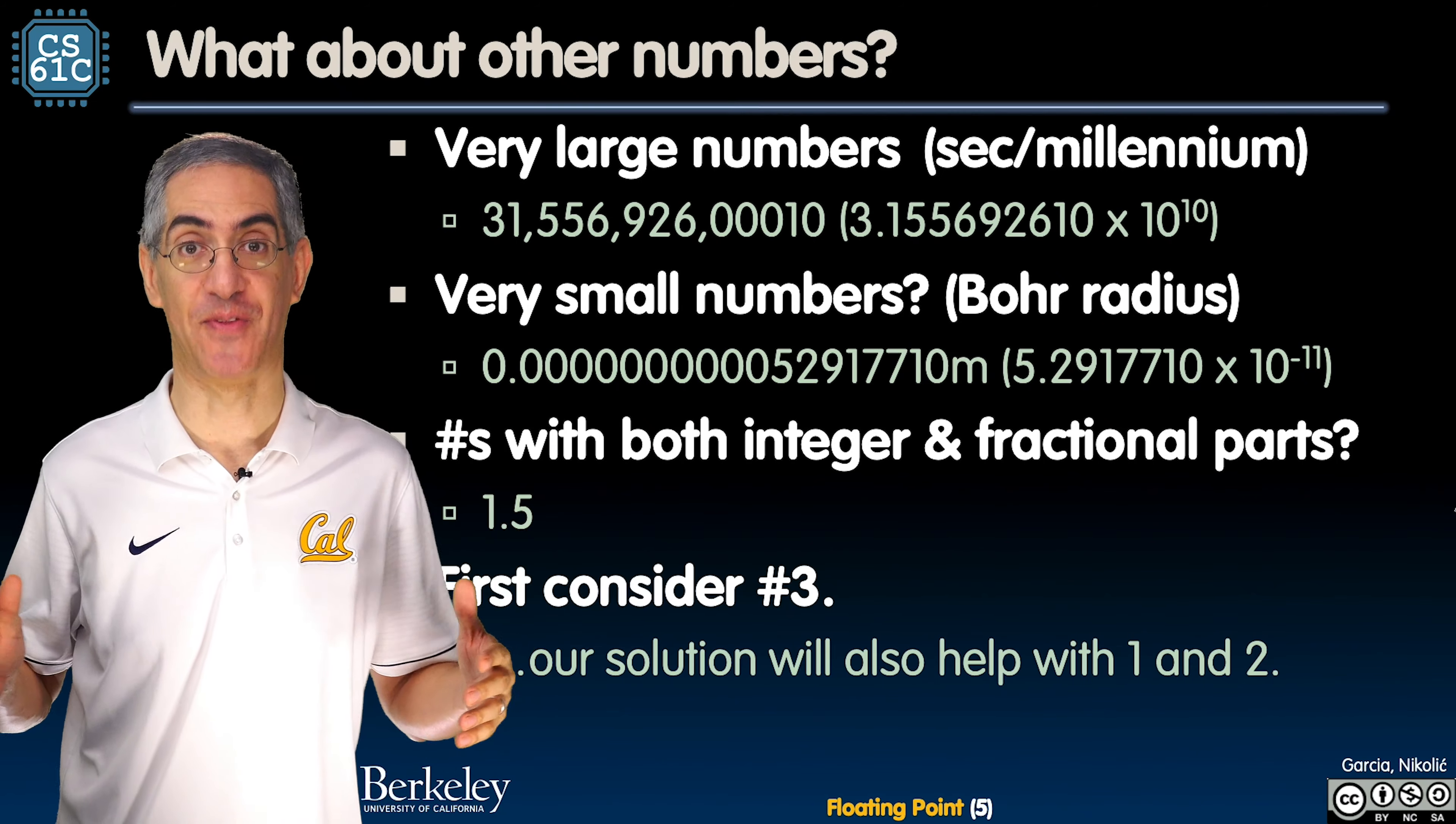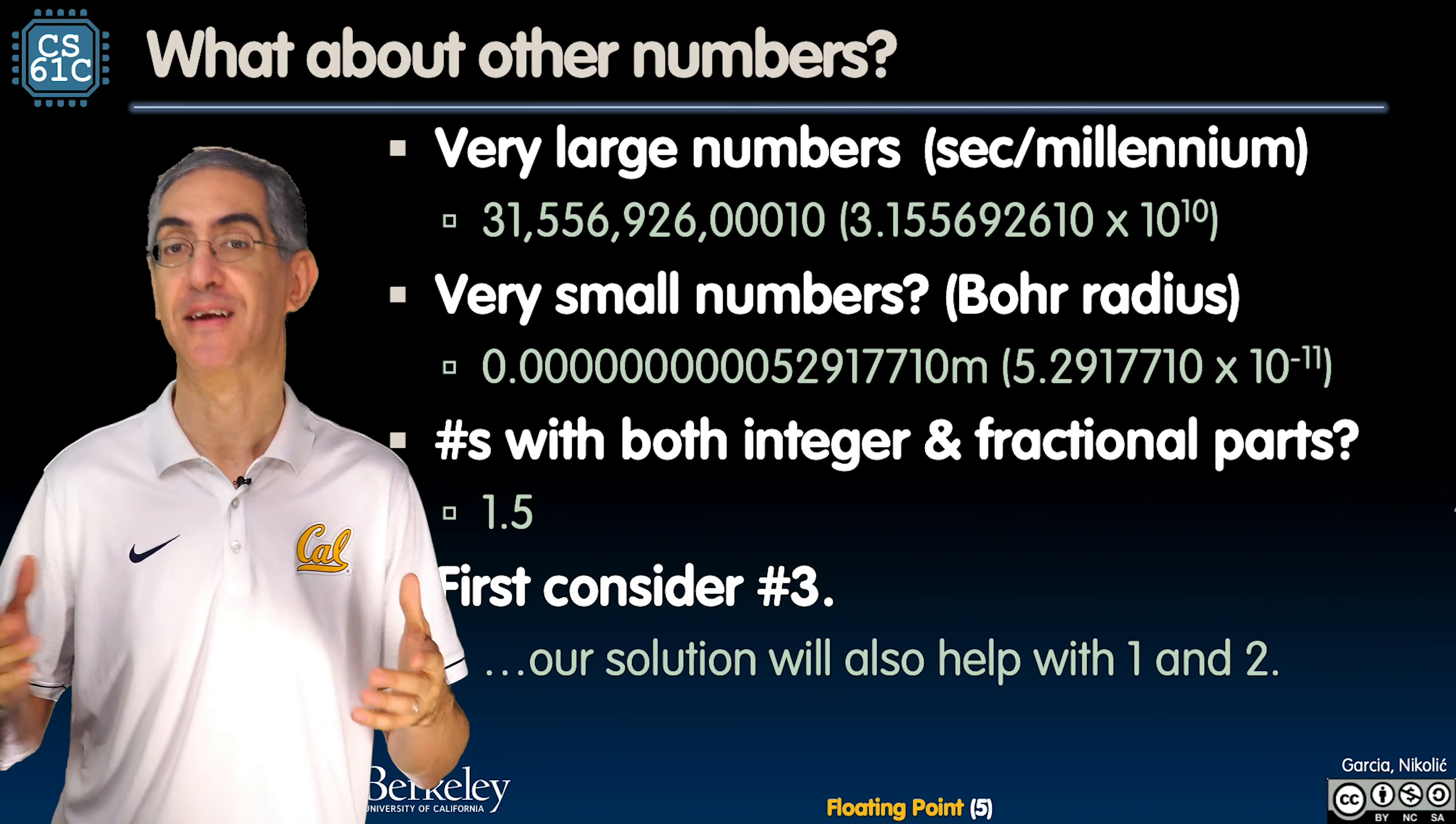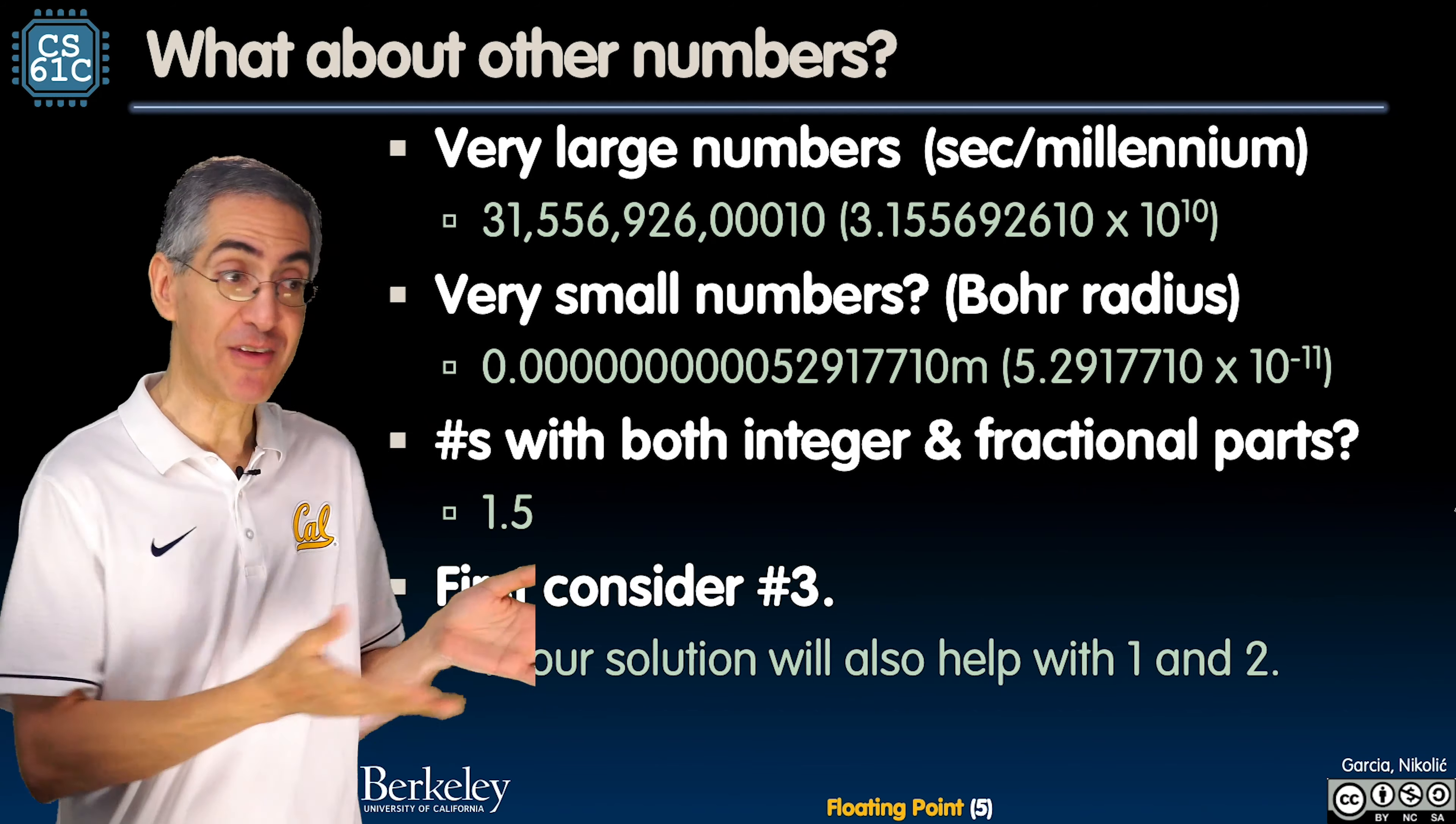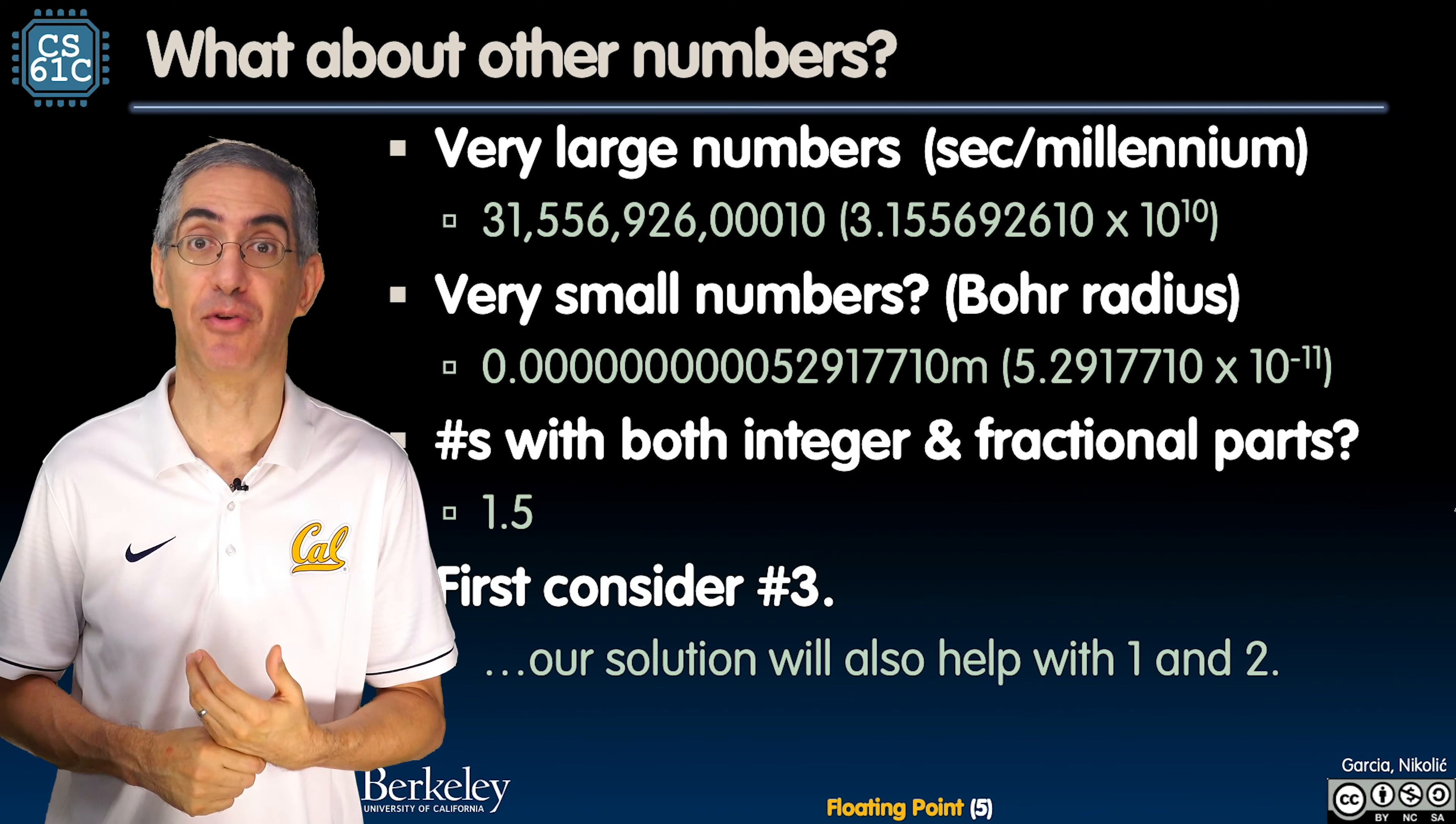But that's not all the numbers that are out there in the world. What about really large numbers like the number of seconds in millennia? 10 to the 10th. Can't do that. We can go to about 10 to the 9th-ish, but not 10 to the 10th. So we're kind of stuck there. How about really small numbers like the Bohr radius? That's 10 to the minus 11th. We're not going to be able to do that.